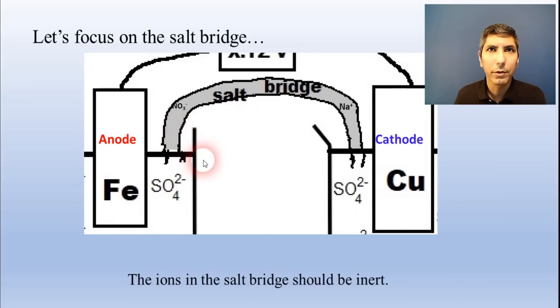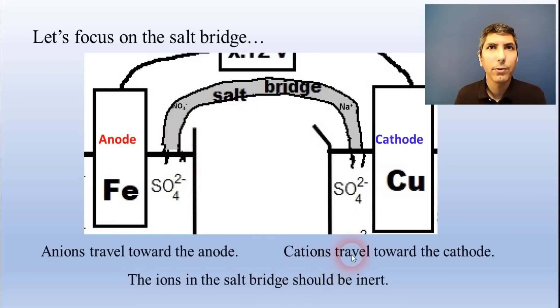At the edge of the salt bridge, cations flow toward the cathode and anions flow toward the anode. You can use the clues given to you in the question to figure out every one of the other details about the galvanic cell.